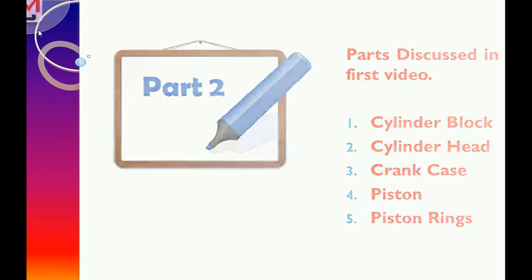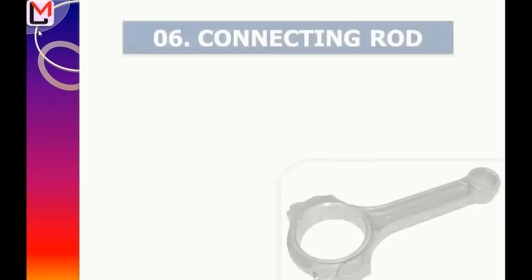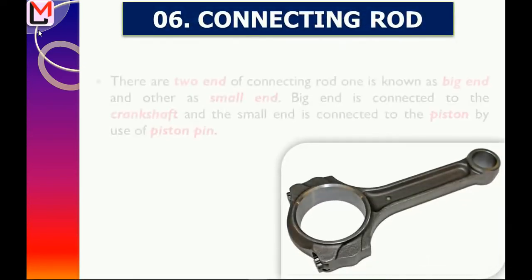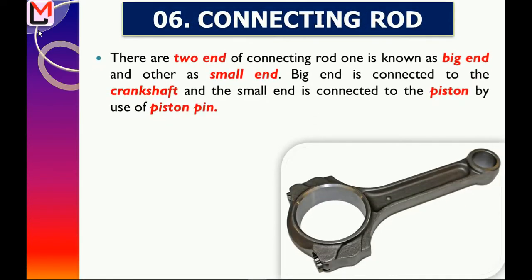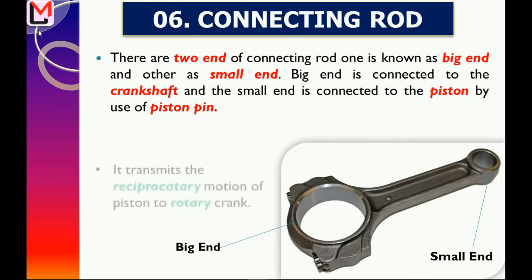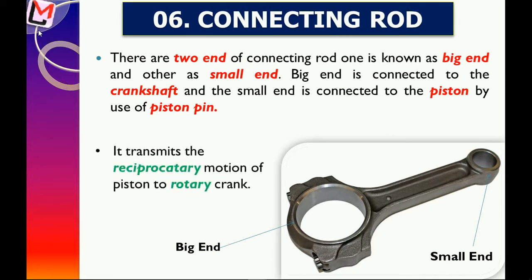Let's start the video with the connecting rod. There are two ends of a connecting rod: one is known as the big end and the other as the small end. The big end is connected to the crankshaft and the small end is connected to the piston by use of a piston pin.